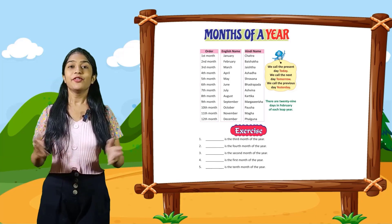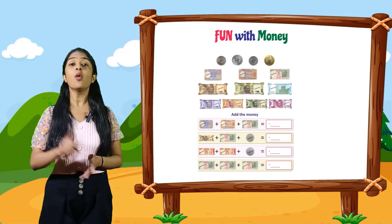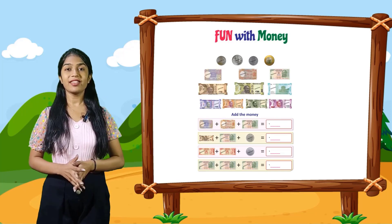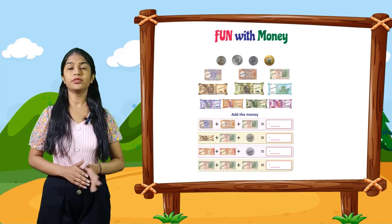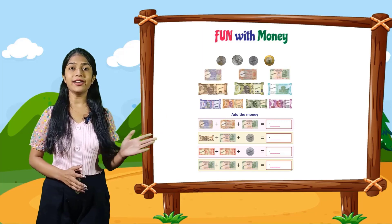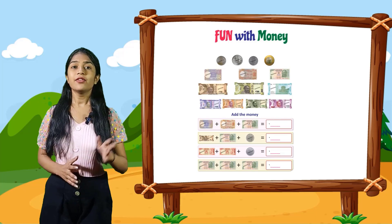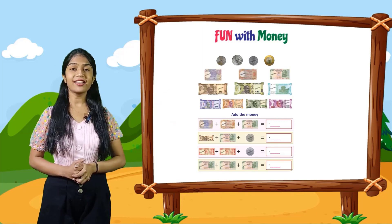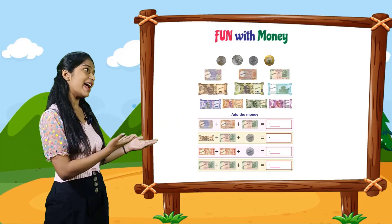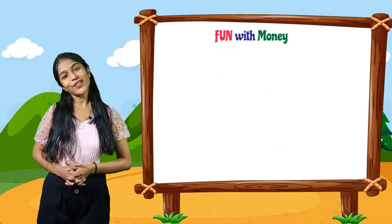Fun with money. Here you can see the coins of 1, 2, 5, and 10, and pictures of notes of 1, 2, 5, 10, 20, 50, 100, 200, 500, and 2000 rupees. Here you have to add the money: a note of 1, a note of 2, and a note of 5 — the total is 8 rupees. Rest you have to do yourself. I hope you enjoyed this table book. Thank you so much, bye bye.